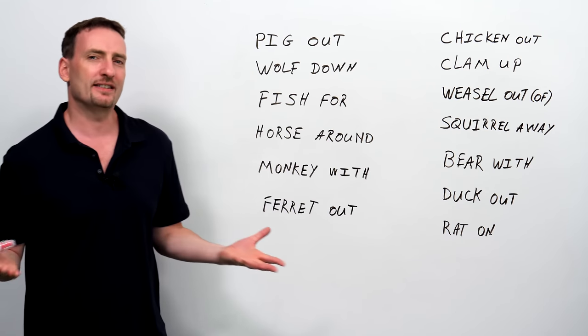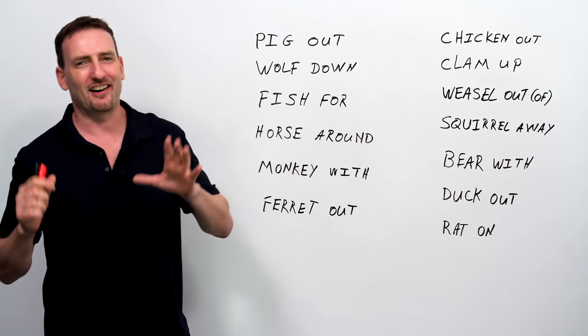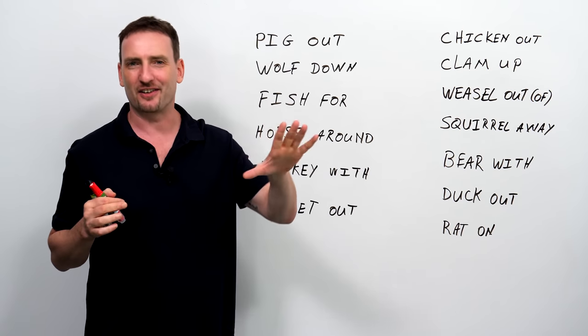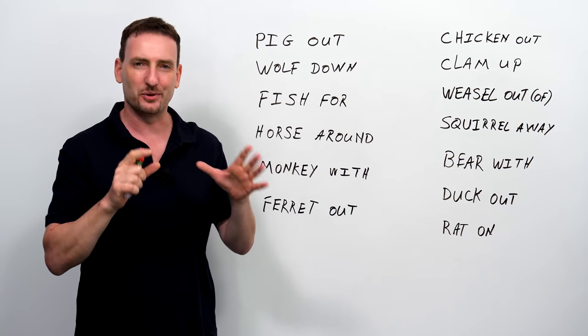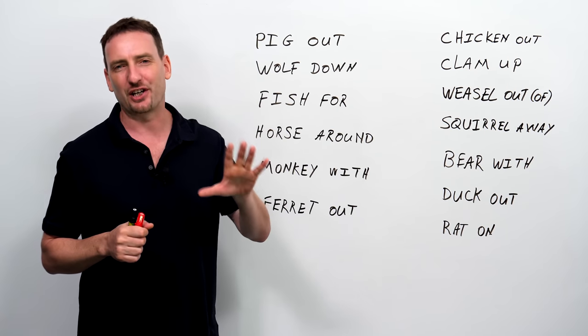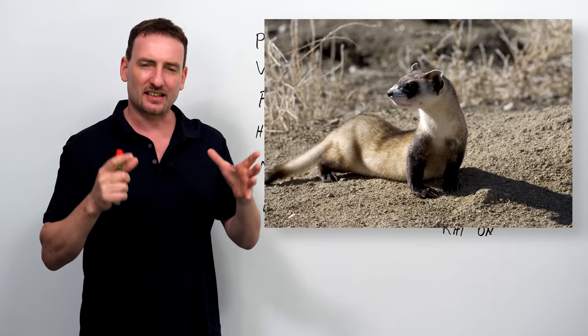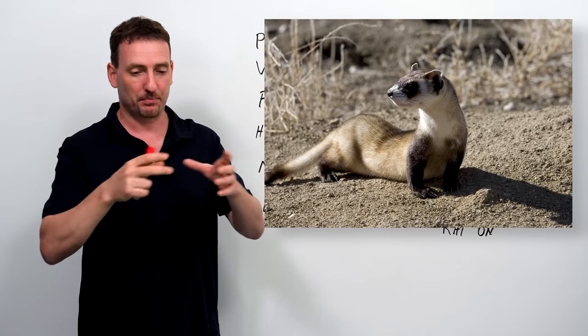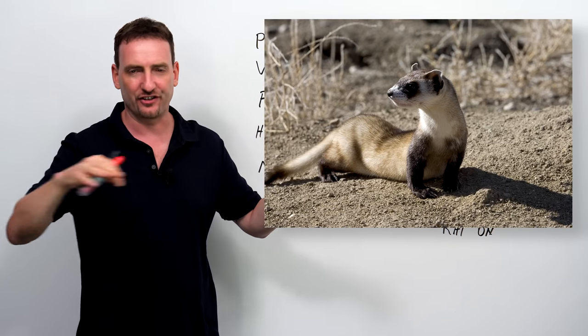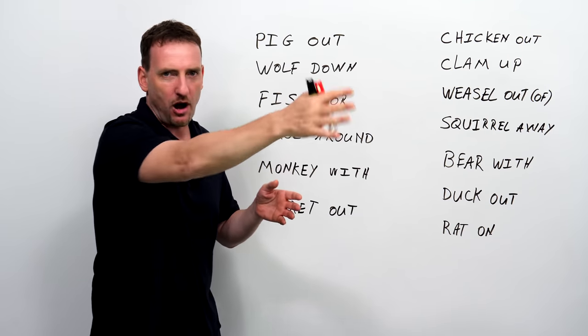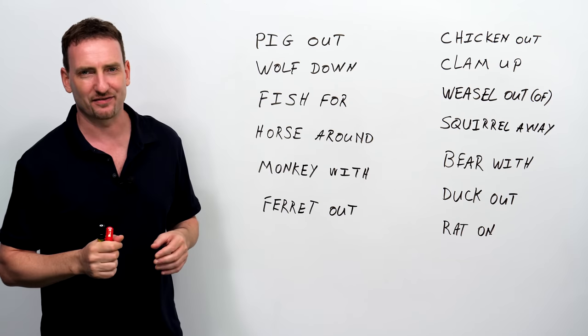Ferret out. First of all, what is a ferret? It's a little bit hard to explain. I recommend that you get on the internet and do a Google search, or whatever search you use, and look at a picture of a ferret. It looks a little bit like a rat, but it's longer, and it has fur, and it walks around all over the place and does all kinds of little things.